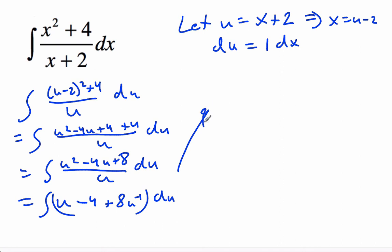So that's going to give me u squared over 2 minus 4u, and plus 8 ln absolute value of u, and plus c.